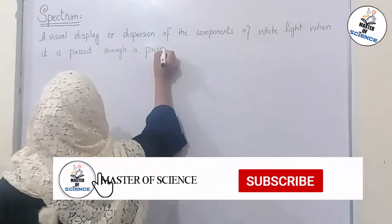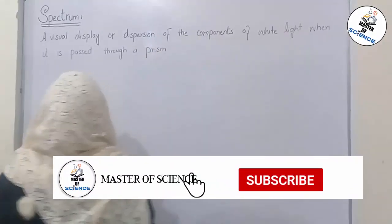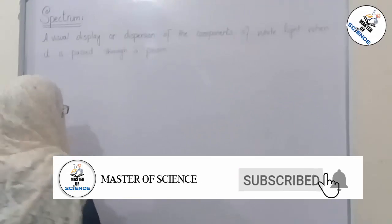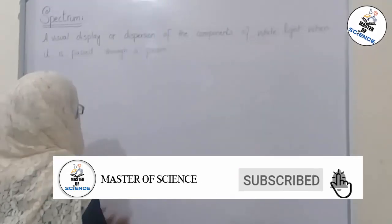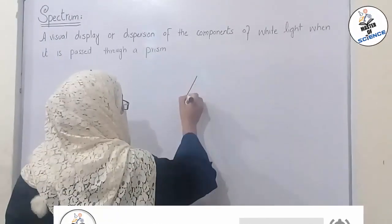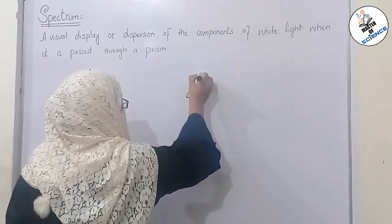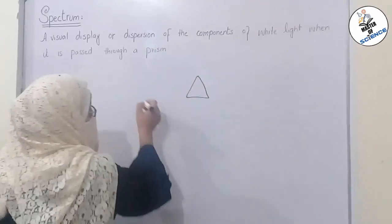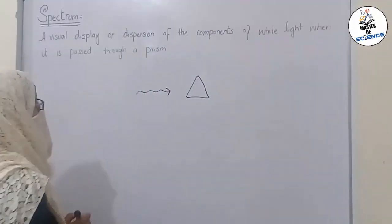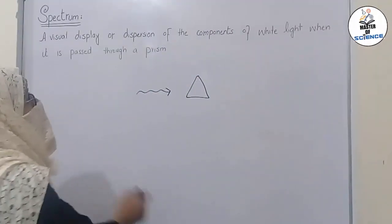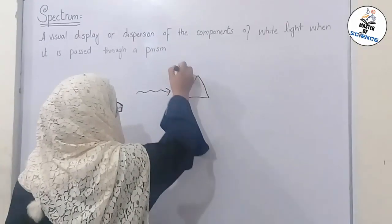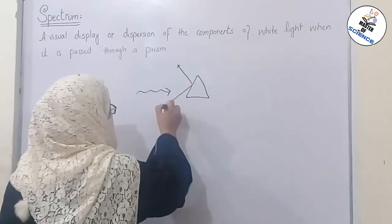It is called a spectrum. We can show it as: this is a prism — when light passes through it, it undergoes dispersion, meaning bending.